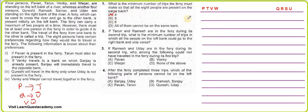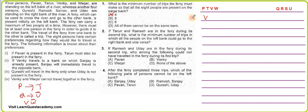Now we apply the rules to check if five trips is still achievable. P cannot go without T, so it makes sense to send P and T together, leaving V and W on the left. V and W cannot travel together, so that separation is fine. In trip one, P and T travel to the right. Left: V and W. Right: P, T, Q, R, S, U.